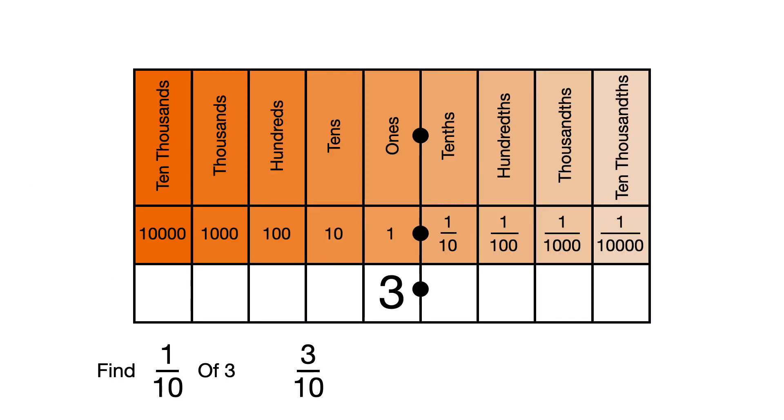Let's find a tenth of 3. Every time we move a digit one place to the right, we are dividing by 10. So to find 1 tenth of 3, we move the 3 one place to the right, from the 1s column to the tenths column. We put a 0 in the empty 1s column to show it's now empty. So 1 tenth of 3, or 3 divided by 10, is 0.3.